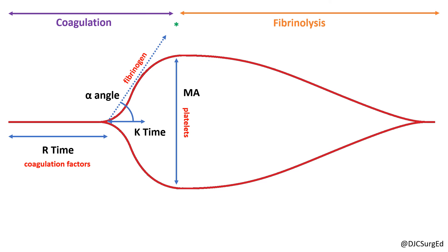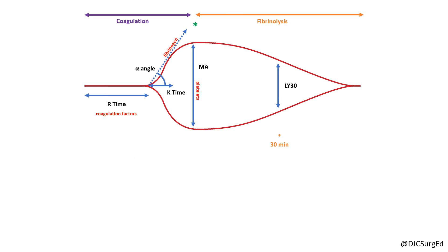The LY-30 is the percentage of clot lysis at 30 minutes after reaching the maximum amplitude and represents the process of fibrinolysis. Therefore, an elevated LY-30 suggests hyperfibrinolysis and may be treated with an antifibrinolytic such as tranexamic acid or TXA.